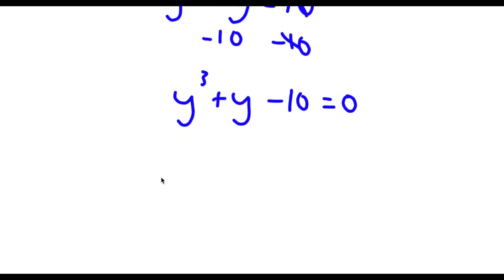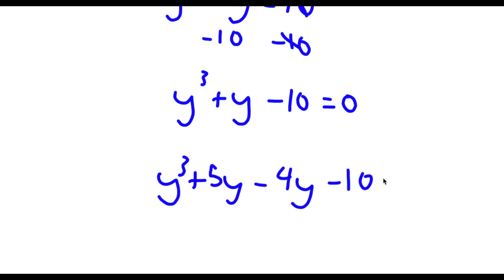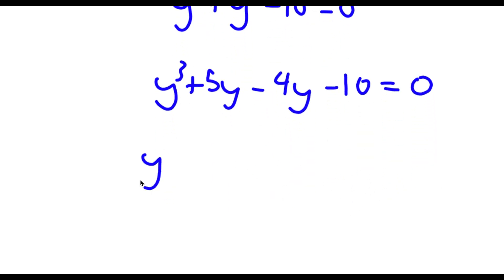Now I'm going to replace y with 5y minus 4y, so minus 10 is equal to 0. This is going to make it much easier to factor. So if I factor out y from y to the power of 3 plus 5y, I get y squared plus 5.